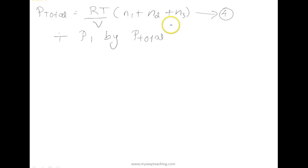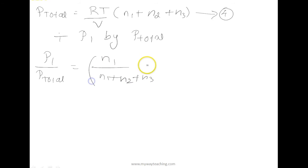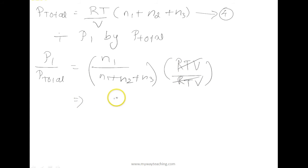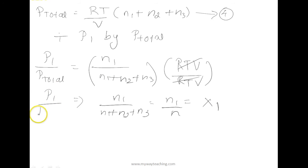Dividing P1 by P_total, we get N1 divided by (N1 plus N2 plus N3), since RT/V cancels out. This simplifies to N1 divided by N_total, which we call x1 — so P1 divided by P_total equals x1, where N equals N1 plus N2 plus N3.